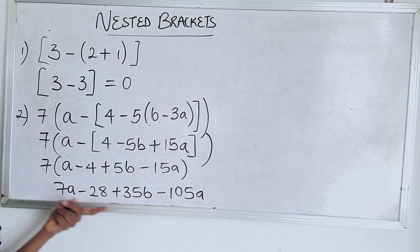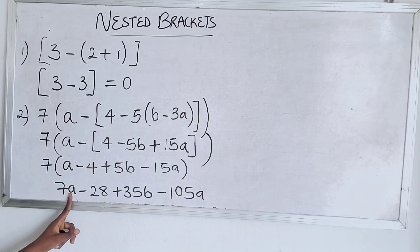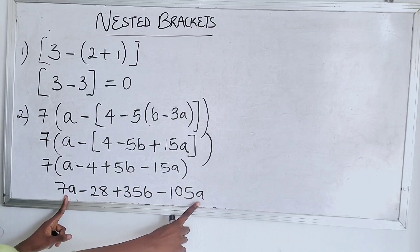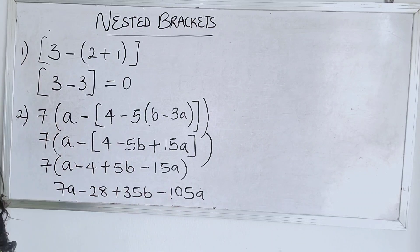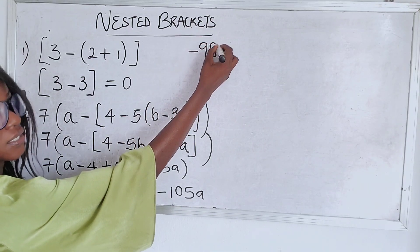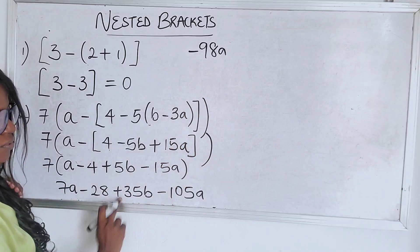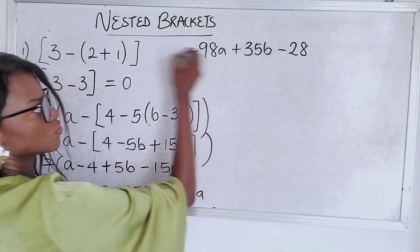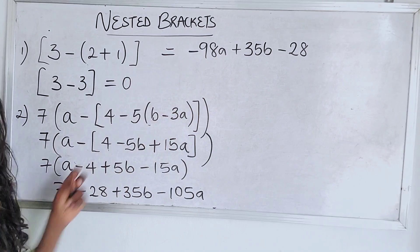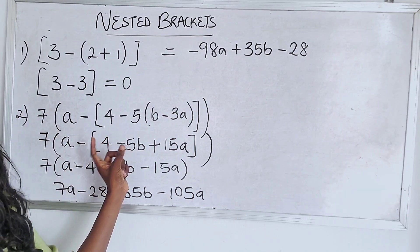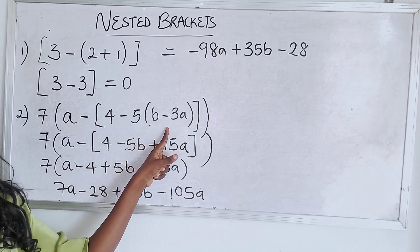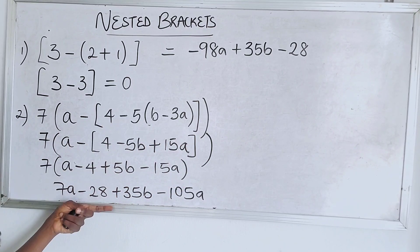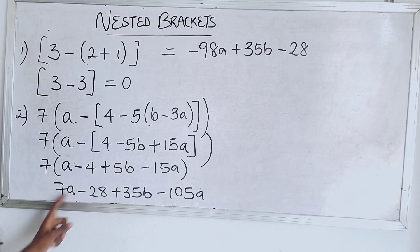Once you're done expanding, take your time to notice what you have. We have 'a' and we have 'a' — they look alike, so collect like terms. Seven a minus 105a is minus 98a. Then we have plus 35b and minus 28. So the final answer is minus 98a plus 35b minus 28. You started from the innermost bracket, expanded to the square bracket, and then to the parenthesis.